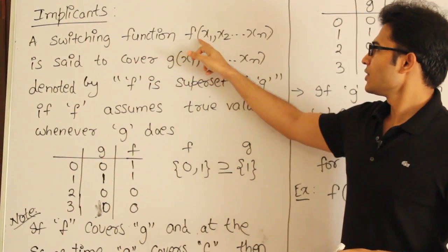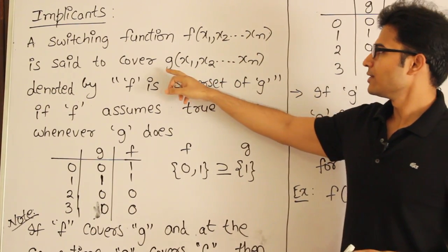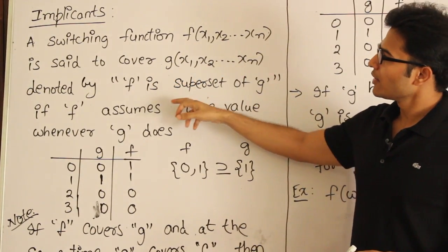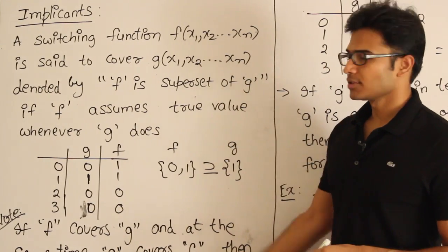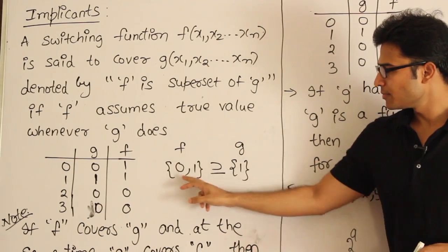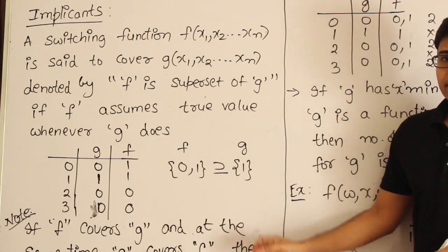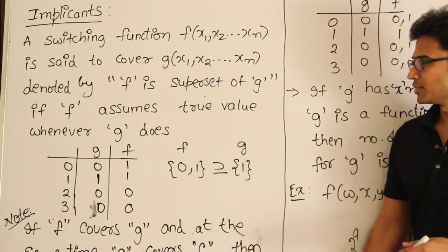A switching function f(x1, x2, ..., xn) is said to cover g(x1, x2, ..., xn) if f is a superset of g — meaning if f contains all the minterms which are already present in g, then it is called f is set to cover g. In other words, f assumes the true value whenever g does.